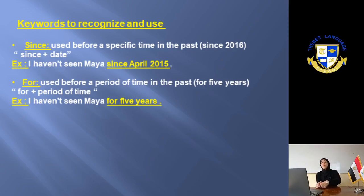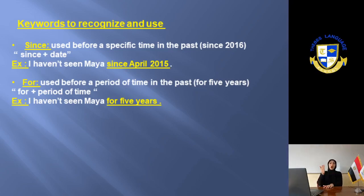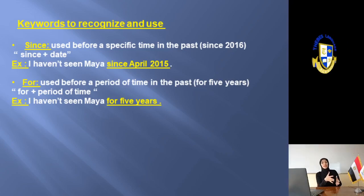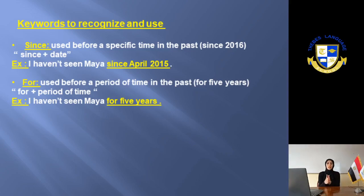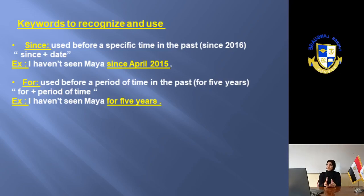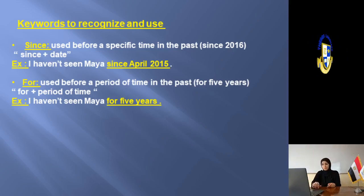The next slide is the interrogative — the question form. For a yes/no question, I will crisscross the sentence: start with 'have' or 'has,' then the pronoun, then the past participle of the verb. For example: 'Has she cooked food?' — 'Yes, she has' or 'No, she hasn't.' For the WH question, start with the WH word, then 'have'/'has,' then the pronoun, then the past participle of the verb. For example: 'Where have you been for two years?' — 'I have been in Greece.'